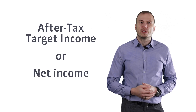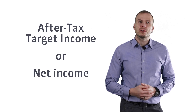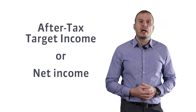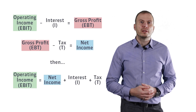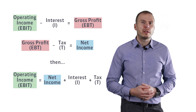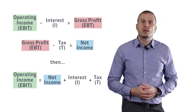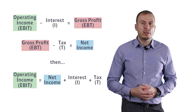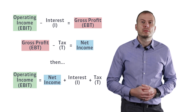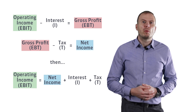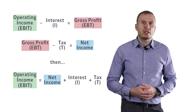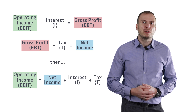Let's focus on target income understood as net income. When calculating the break-even point, income taxes play no role — this is because the income tax paid on zero income is always zero. However, when the company needs to know how many units to sell to earn a particular net income, a change to the existing formula is needed.